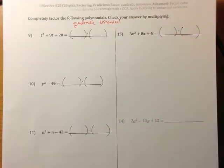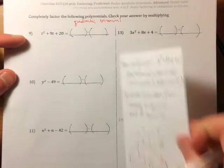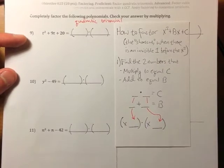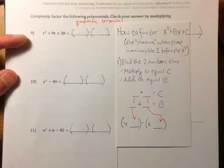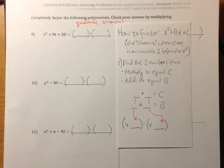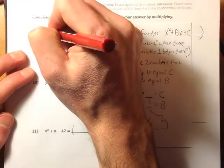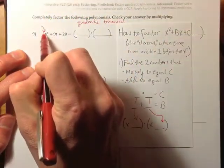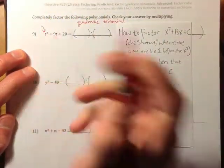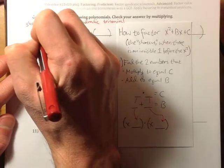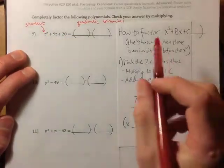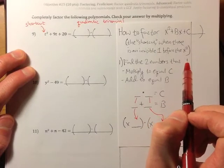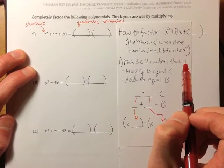Well, let me remind you of how we do that. First of all, with number 9 here, I hope you notice that we can use the shortcut to factor this. The reason we can use the shortcut is because there is an invisible 1 on the t squared. Now the shortcut allows us to factor easily.